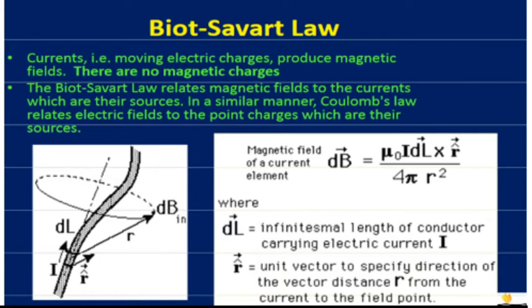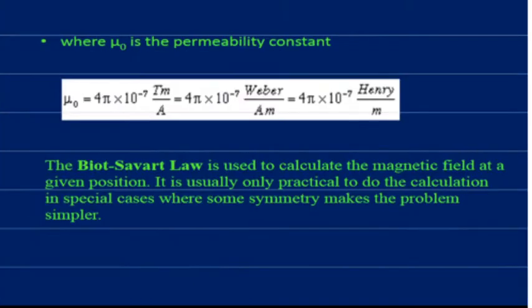Repeating the Biot-Savart formula: B = μ₀ I dl × R̂ / (4π R²), where R is the distance to point P where we calculate the magnetic field intensity. The value of μ₀ is 4π × 10⁻⁷ tesla·meter per ampere, also written as Henry per meter. You must remember these units and this value as they are required for solving numericals.